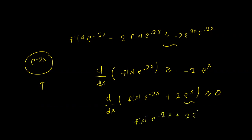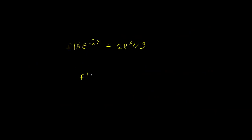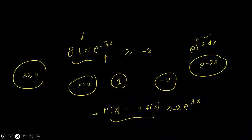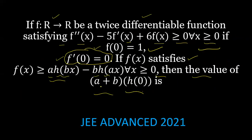Since the expression is increasing and checking the value at zero gives 3, we conclude that f(x) times e^(-2x) plus 2 e^(x) is greater than or equal to 3. Therefore f(x) is greater than or equal to 3 times e^(2x) minus 2 times e^(3x). This is the final inequality for f(x).